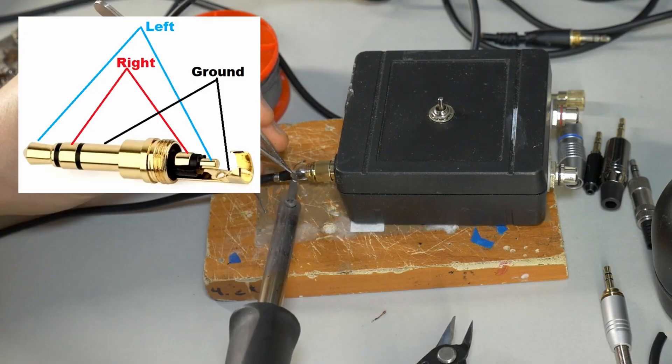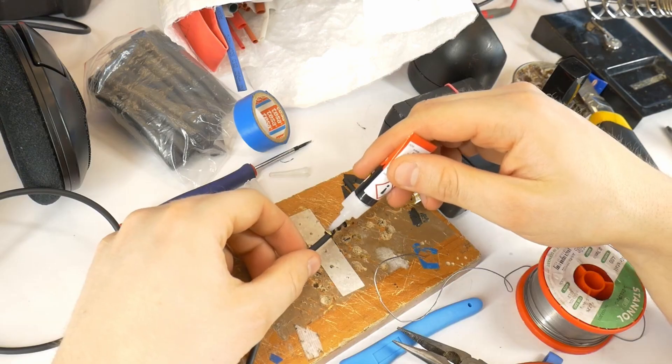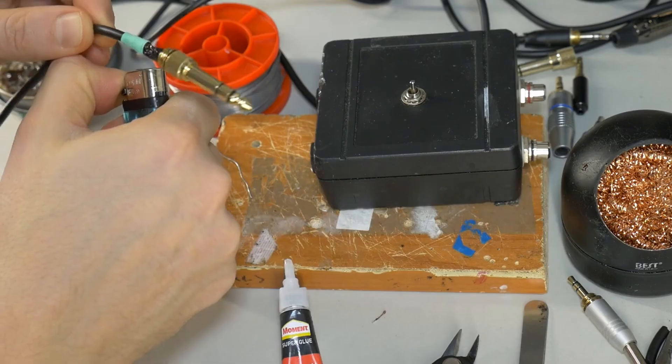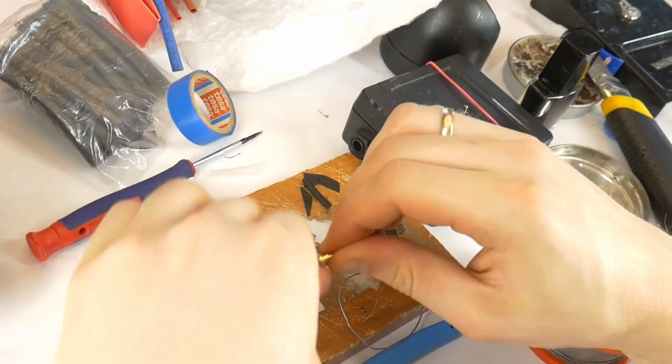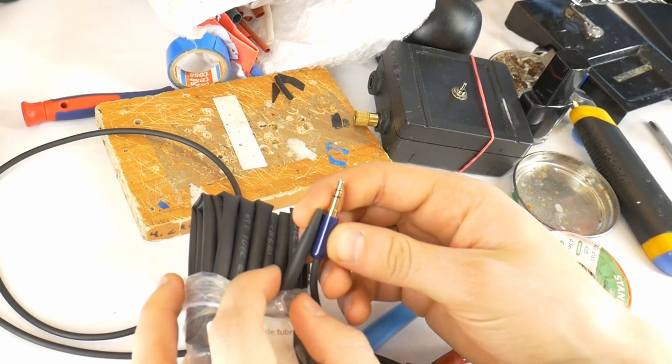Once you've figured it out, solder the wires in place, apply super glue, slide the heat shrink tubing over, add more glue, and screw the jack closed. If you want a cleaner finish,